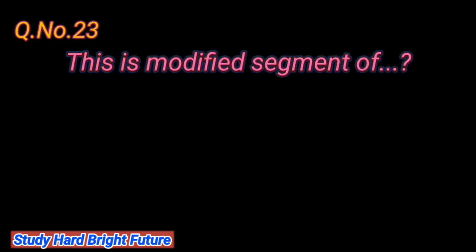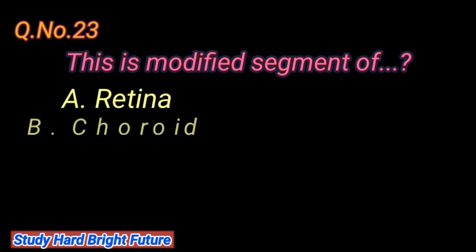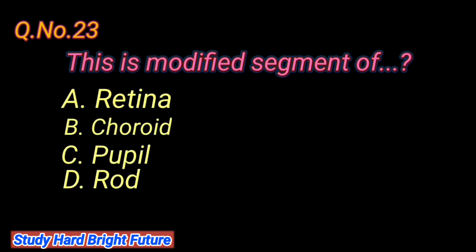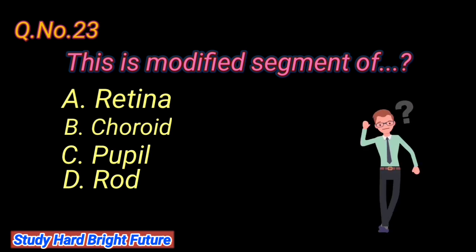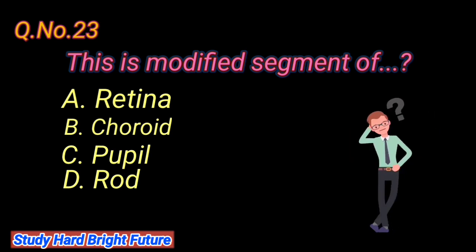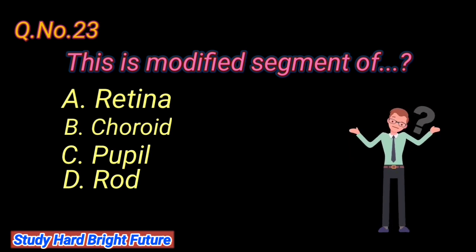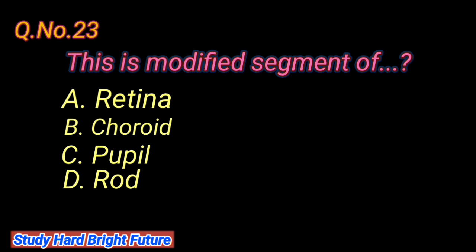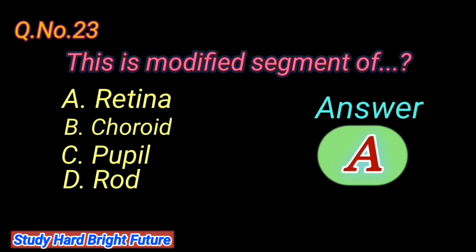Question number 23: This is a modified segment of. A. Retina, B. Choroid, C. Pupil, D. Choroid. The right answer is A. Retina.